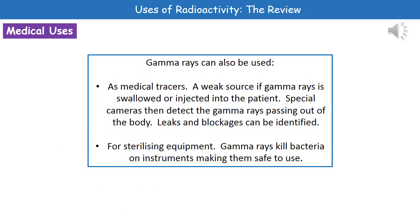We can also use gamma rays as medical tracers. This is where we use a weak source of gamma radiation, which is either injected or swallowed depending on which part of the body we need to study. We then use special cameras to detect the gamma rays passing out of the body. Depending on the level of radiation picked up, we can identify where there's a leak or a blockage in that part of the body. It's a way of identifying where a problem is without having to carry out surgery.